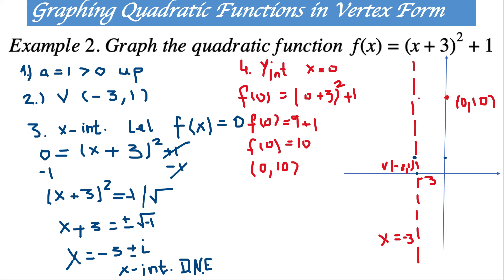The y-intercept (0, 10) is 3 units from the axis of symmetry. Using symmetry, the mirror point on the left is (negative 6, 10). Now we can connect all the points and graph the function. This is the graph of the quadratic function in vertex form, with the parabola opening upward and vertex at (negative 3, 1).